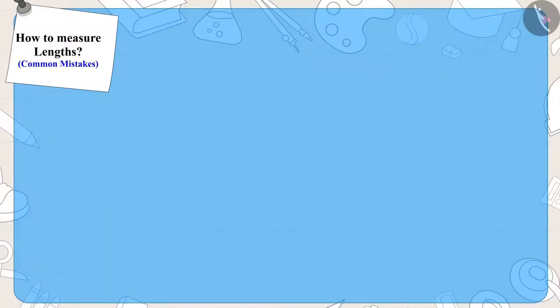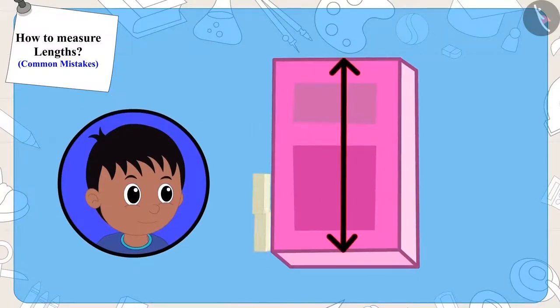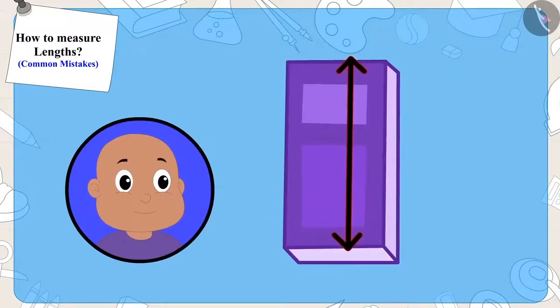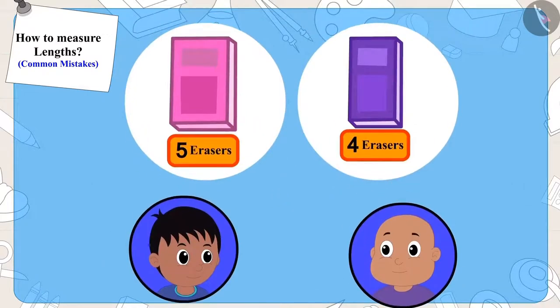Raju had measured his notebook, placing the eraser in this way. But while measuring his notebook, Bablu placed the eraser a little above the bottom end. That is why the length of his notebook was four erasers long instead of five erasers long.